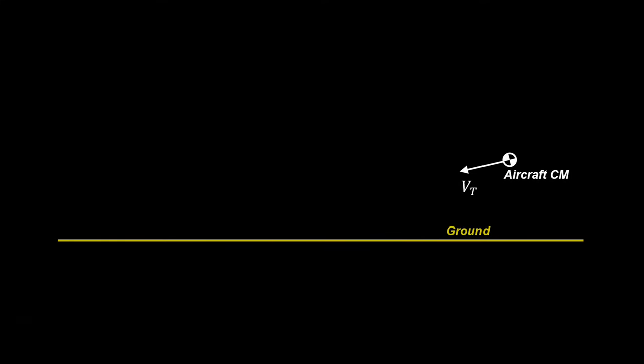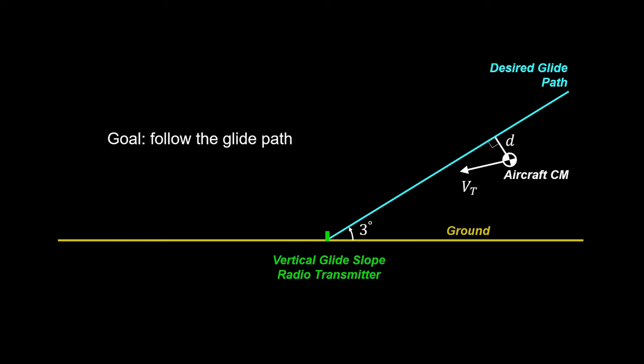To establish a landing slope, a radio transmitter commands a desired glide path angle of three degrees above the horizontal. The aircraft has instruments in its nose to receive this guidance. The goal is to make the aircraft follow the glide path, that is, force the distance d to zero.